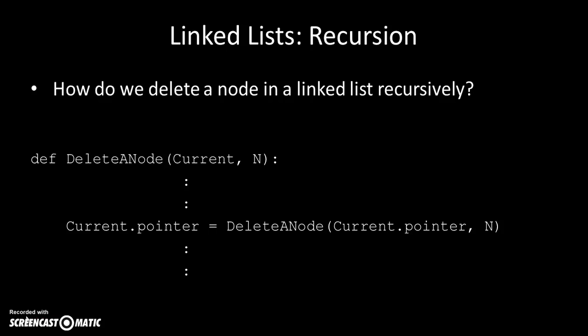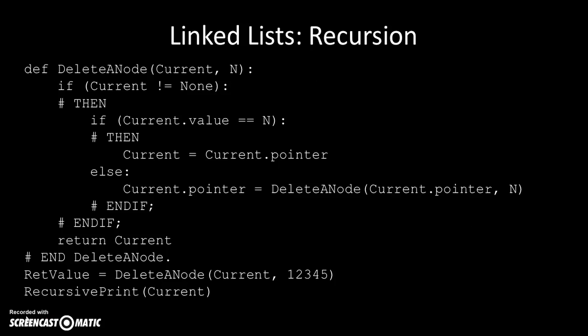Deleting a node: the method takes current.pointer and the value n, and we say current.pointer = delete_a_node(current.pointer, n). Here's the full code: if the list is null, return; otherwise if current.value equals n, delete it by assigning current.pointer to whatever current was pointing to; otherwise, current.pointer = delete_a_node(current.pointer, n), called recursively. That's deleting a node using recursion.